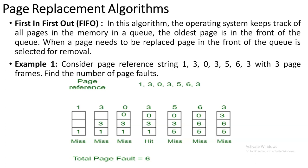The first string is 1 — you insert it into the frame, that is a miss. The next string is 3 — 3 doesn't already exist, so it is a miss. The third string is 0 — 0 does not exist in the frame, so it is a miss. The fourth string is 3 — you check inside the frame and 3 is already there, so you don't need to insert it again. That is a hit.